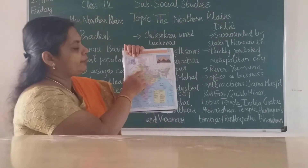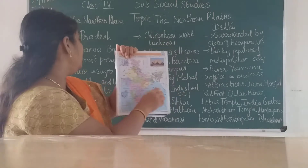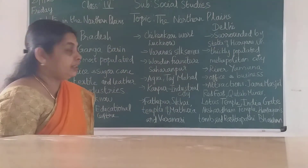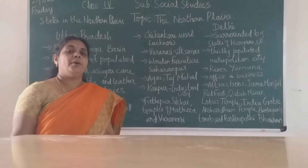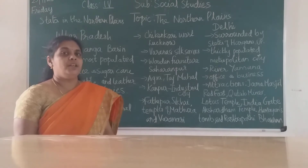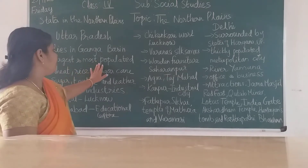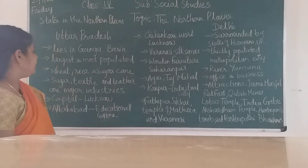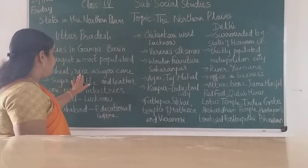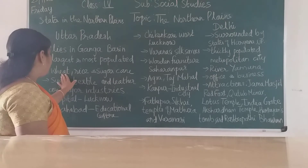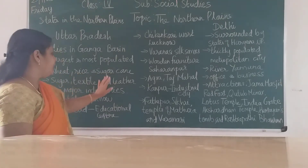Observe here — this is Uttar Pradesh. It is one of the largest and most populated states, meaning the population in Uttar Pradesh is the largest. The main crops grown in Uttar Pradesh are wheat, rice, and sugarcane.